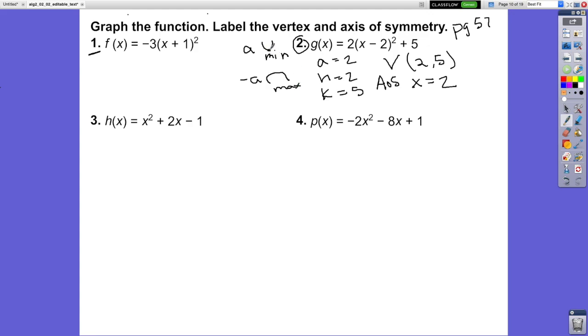What I mean is that a minimum has a low point and a maximum has a high point. Knowing that a is positive, this is going to be a minimum—the minimum is 5.